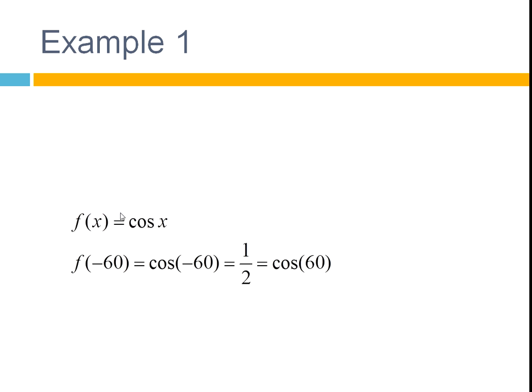So start with this, f of x equals cos x. So we'll just shove in f of minus 60. So cos minus 60 equals a half. You can put that into your calculator and you'll see it gives you a half. Cos 60, you should know, is a half. So this function has been unchanged by using the negative value.